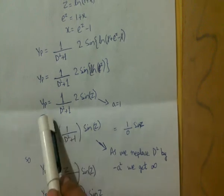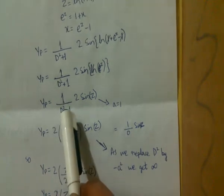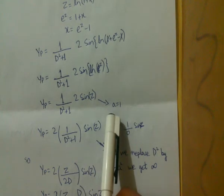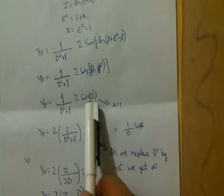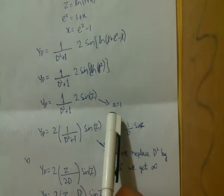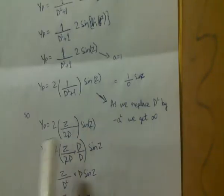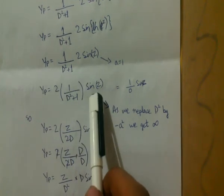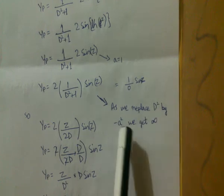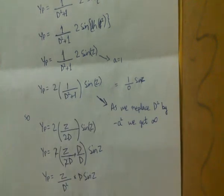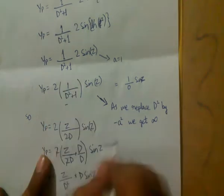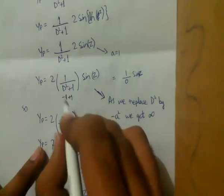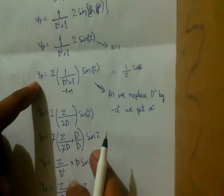From this, a² = 1. Replacing D² with −a² = −1: the denominator becomes −1 + 1 = 0, making yp undefined (infinity). So this direct approach fails and we must use an alternative method to get a real value of yp.